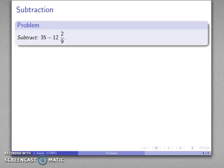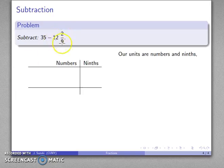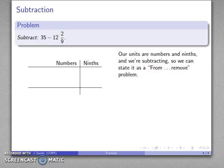Subtraction is no different. We are still doing the same thing. We want to subtract 35 minus 12 and 2 ninths. So here our units are going to be numbers and ninths. I'll go ahead and set down my place value chart. It's a subtraction problem, so I can rephrase this as: from something, remove something. So from 35, I'm going to remove 12 and 2 ninths. This is the amount I'm removing: 12 and 2 ninths.